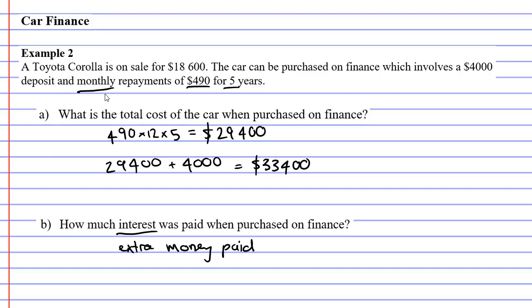So if I had the cash up front, I would have paid $18,600, but I paid quite a bit extra. So if I subtract them, $33,400 minus the cash price, that will tell me the interest that I paid: $14,800. All right, that's the end of example two.